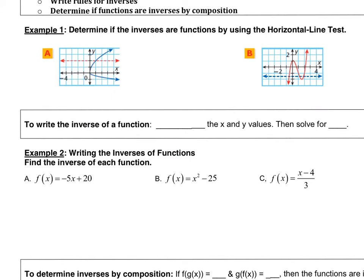To figure out if inverses of functions are functions, we need to use not the vertical line test but the horizontal line test. Looking at this original function in blue, it wouldn't pass the vertical line test, but to see if the inverse is a function, we use the horizontal one. Since a horizontal line only crosses it one time — we could put a horizontal line anywhere and it would only cross one time — the inverse is a function because it passes the horizontal line test.